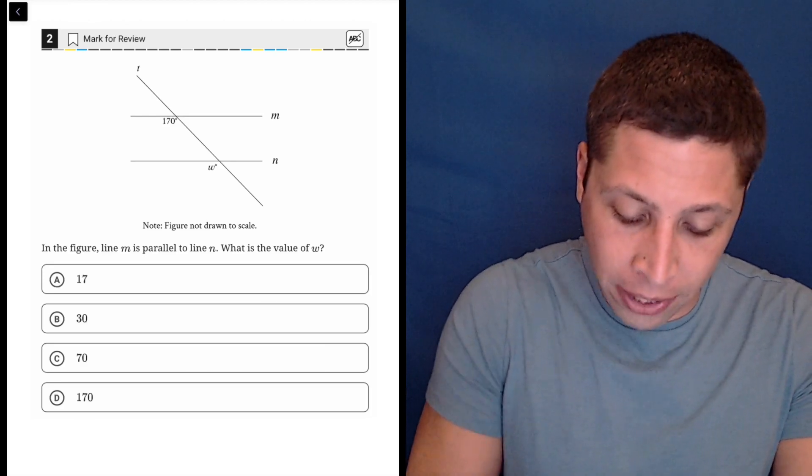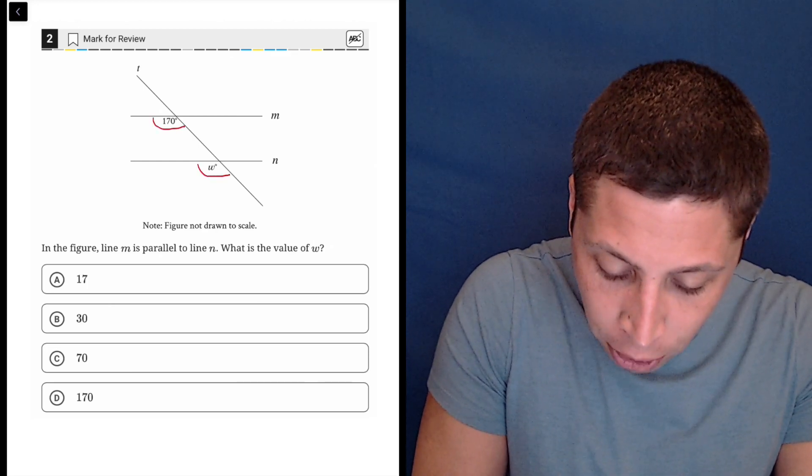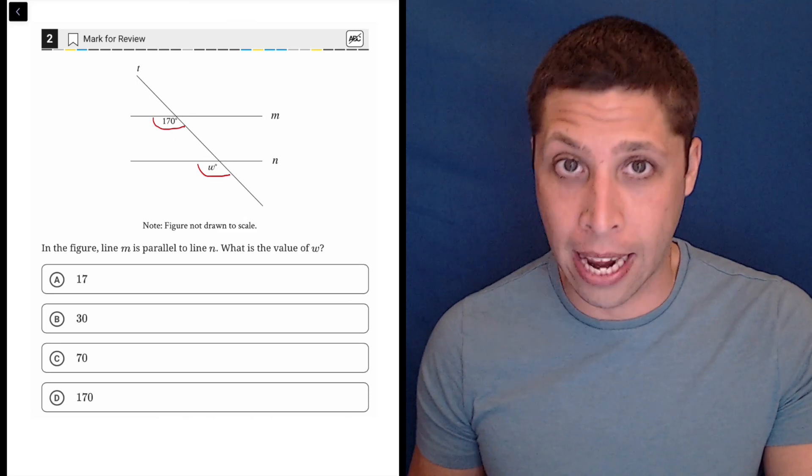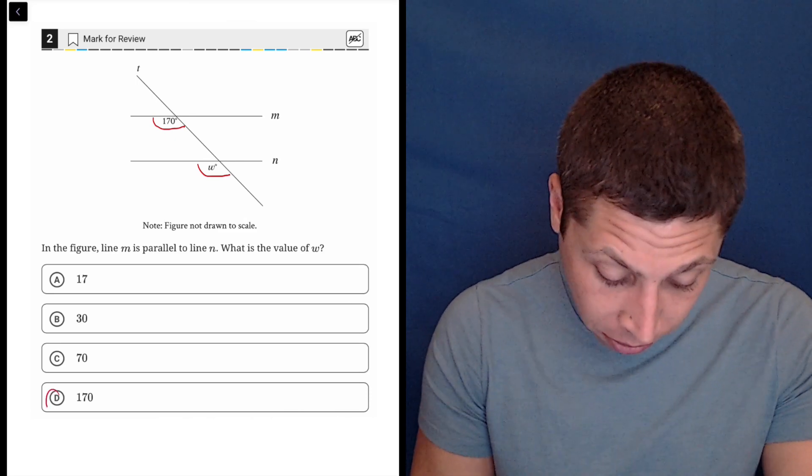So in this case, it's very clear that this 170 is going to carry over down here. If these are parallel lines, these would be called corresponding angles. And so the W is just 170.